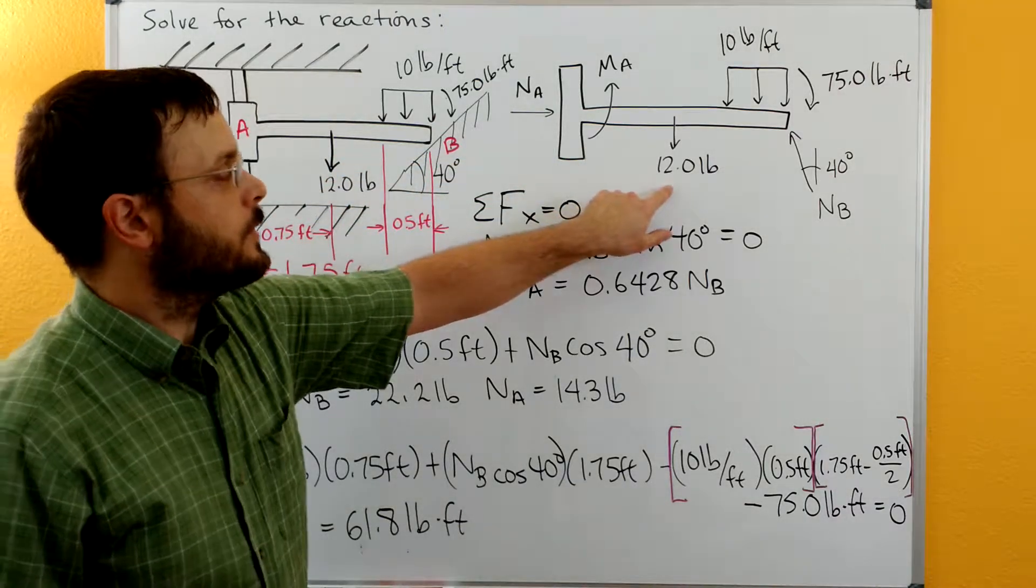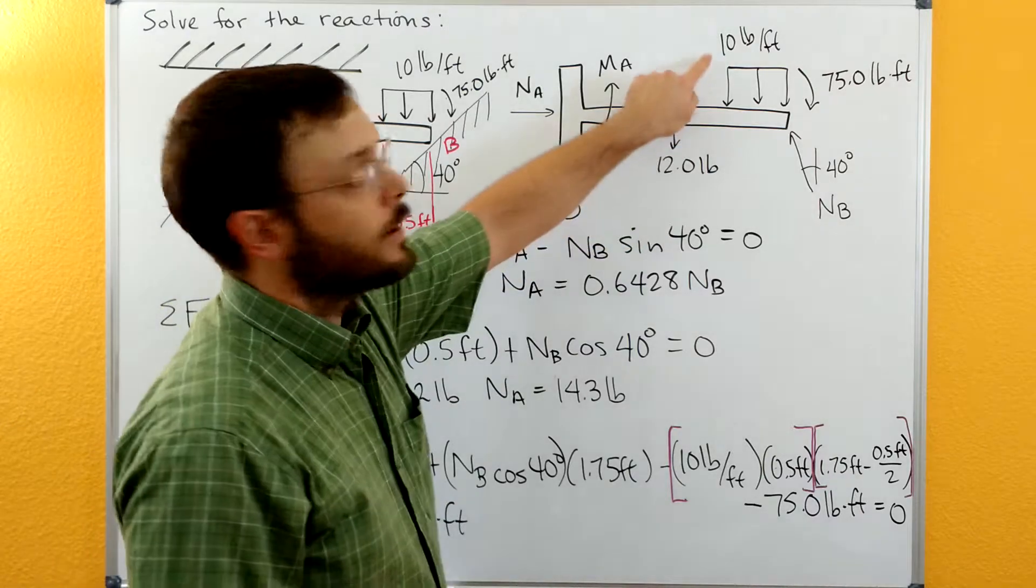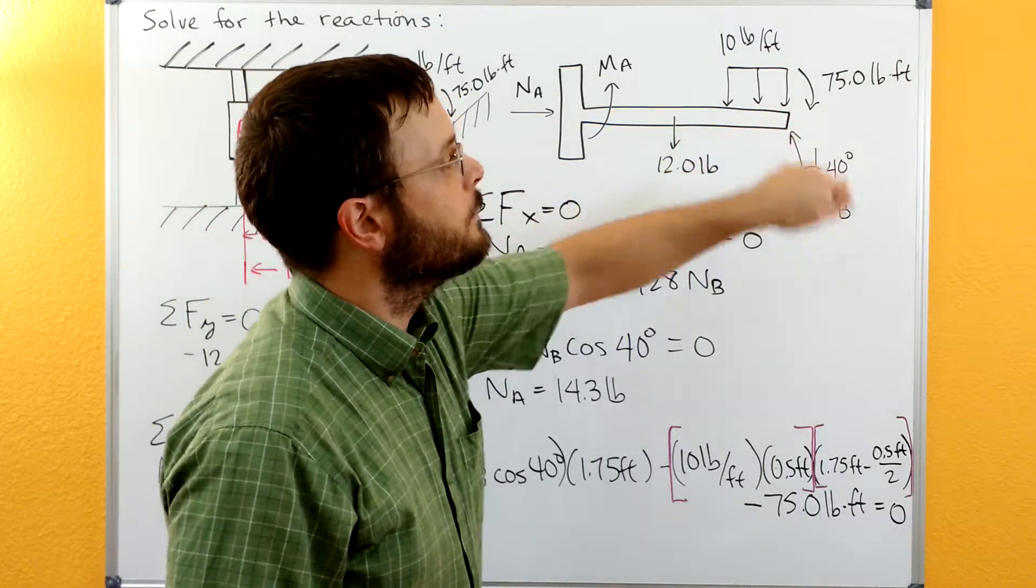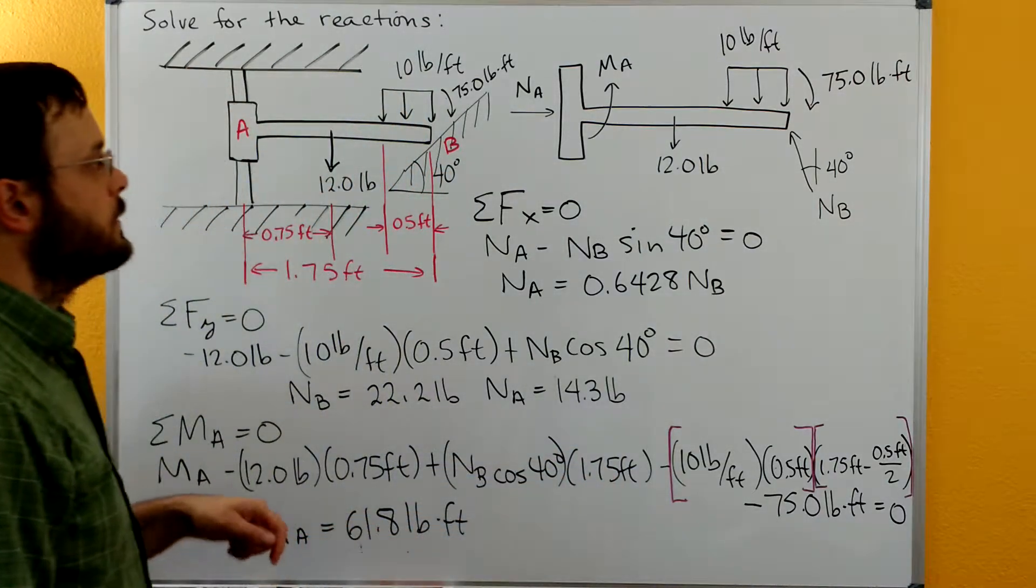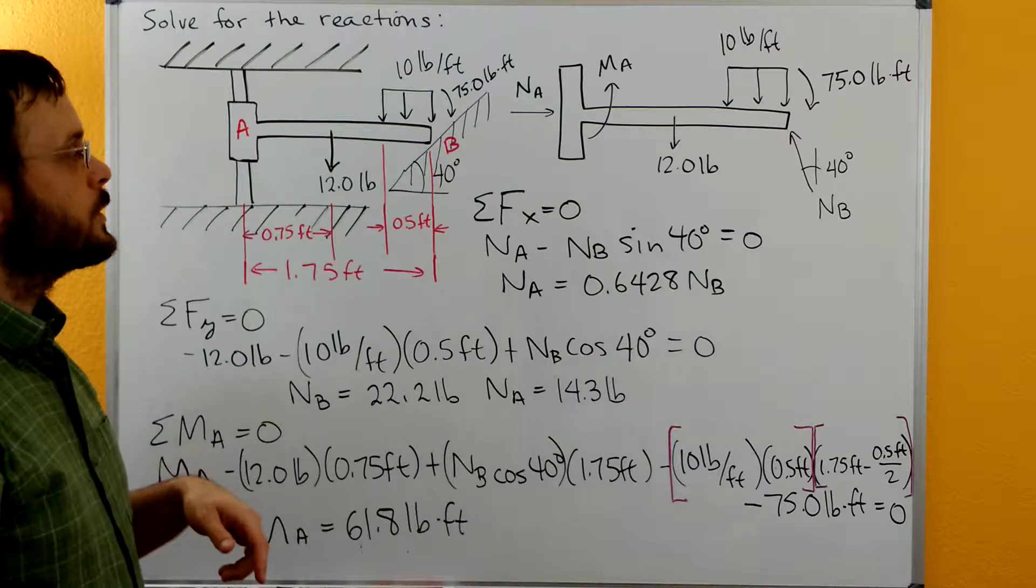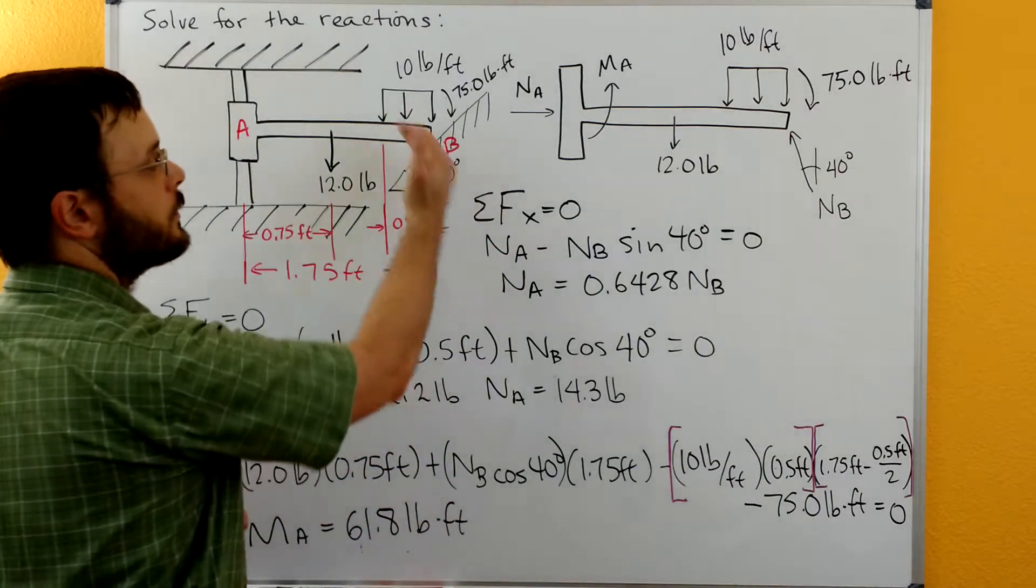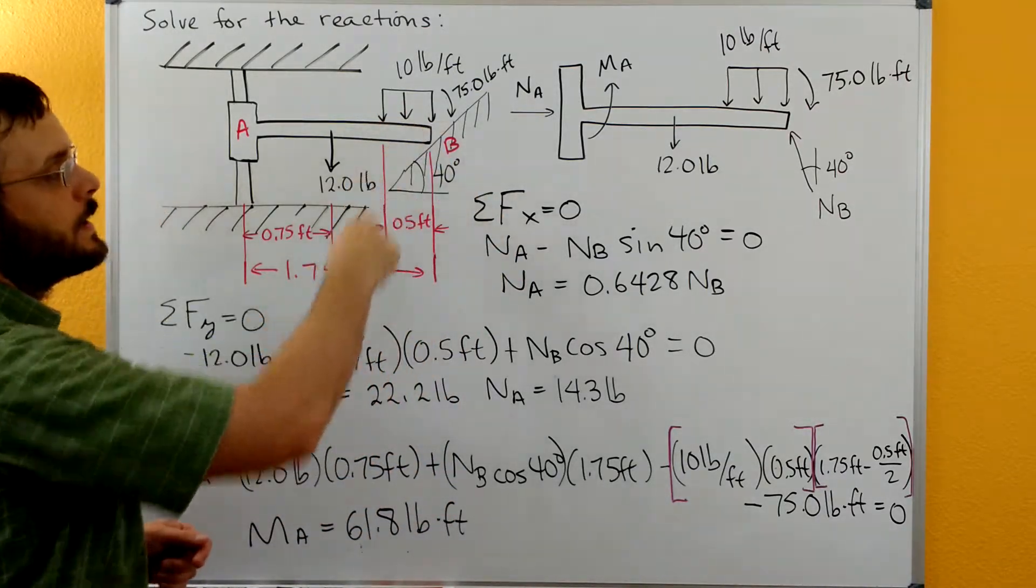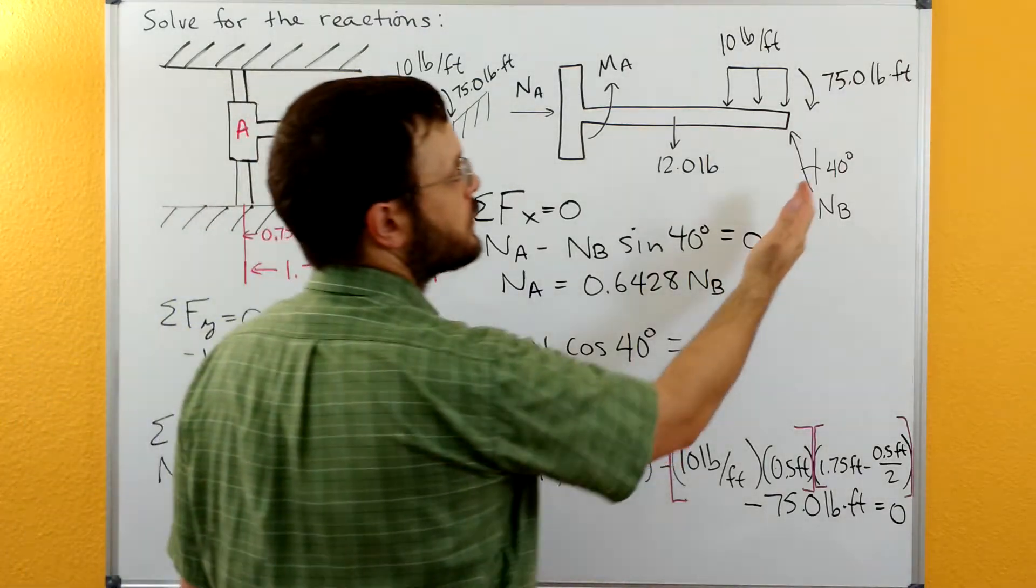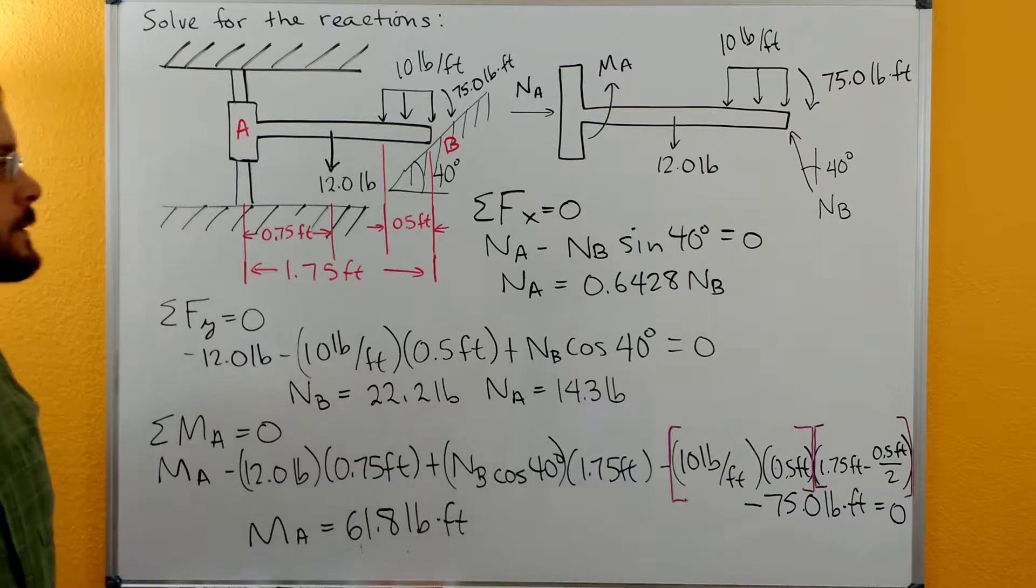Here's our 12 pound force going down, our 10 pound per foot distributed load, our 75 pound foot couple moment, and then at B here where we contact the smooth frictionless surface we're going to wind up with a normal force. If this incline is 40 degrees to the X axis, then our normal force is going to be 40 degrees to our Y axis.